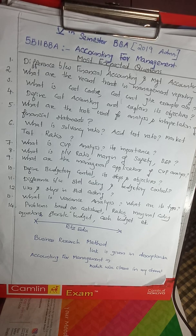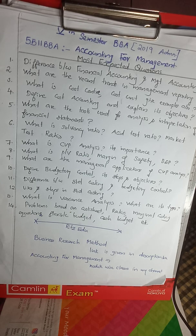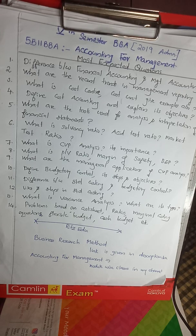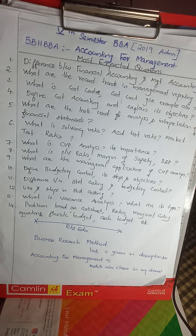Define cost accounting and explain its objectives. Cost accounting is a system where costing information and costing data are recorded. This information is not available outside the business — it is available only inside, for example: costing data, product price, cost structure, etc. The cost accounting system provides necessary information regarding the cost of manufacturing products or services.